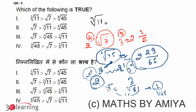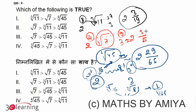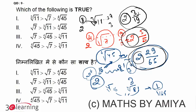Now for the cube root of 11: 2 cubed is 8 and 3 cubed is 27. So it is 2 and the gap between 8 and 27 is 19, and the gap from 8 to 11 is 3. So the cube root of 11 is approximately 2 and 3 by 19. Comparing: 3 out of 5 is more than 3 out of 19, so the square root of 7 is greater than the cube root of 11.